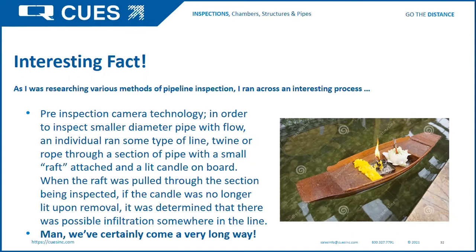An interesting fact about pre-inspection camera technology: in order to inspect smaller diameter pipe before camera systems were available, an individual ran a line, twine, or rope through a section of pipe with a small raft attached and a lit candle on board. When the raft was pulled through the section being inspected, if the candle was no longer lit upon removal, it was determined that there was a possible infiltration somewhere in the line. We've certainly come a long way from that — it's simply amazing what we've done historically to inspect and make sure things were working properly.